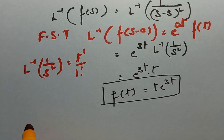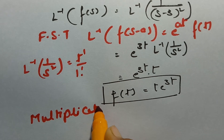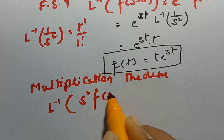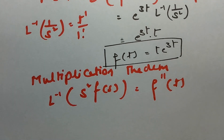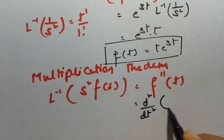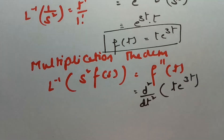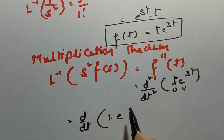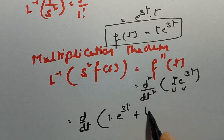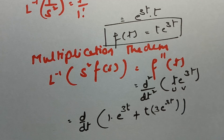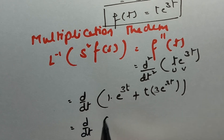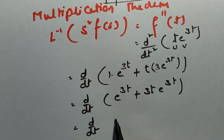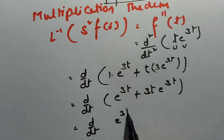Now apply the multiplication theorem: inverse Laplace transform of s²·F(s) = f″(t), so I make the derivative two times: d²/dt² of t·e^(3t). First derivative using UV rule: derivative of t is 1, times e^(3t), plus t times 3e^(3t), giving e^(3t) + 3t·e^(3t). Taking e^(3t) common: e^(3t)·(1+3t).